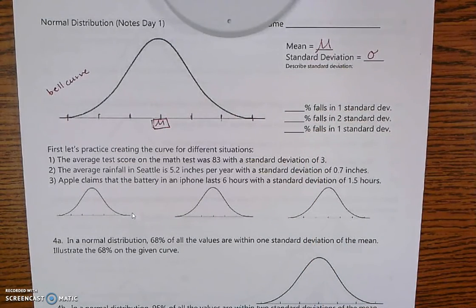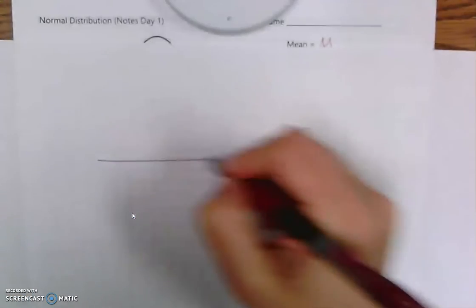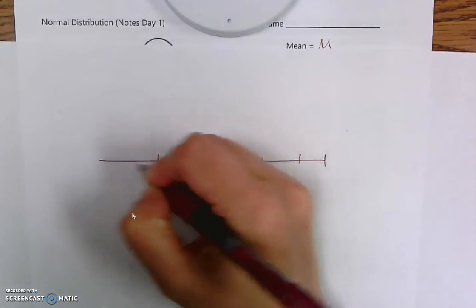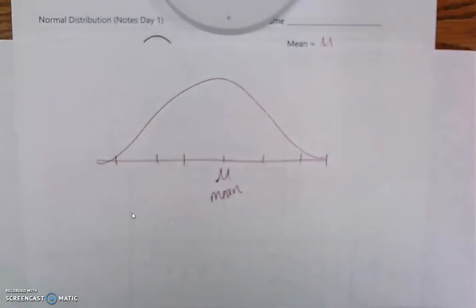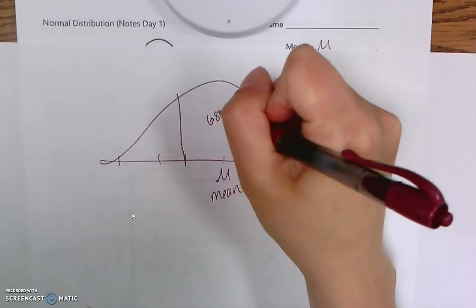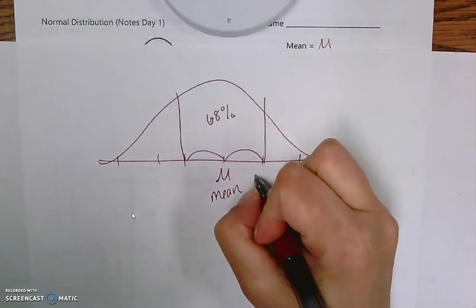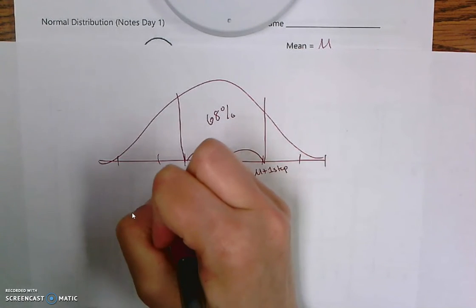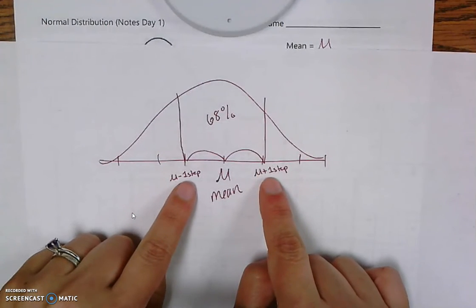I'm going to start by giving you an example, and then we'll go back and fill in these notes. We're going to learn that the standard deviation is based on a certain number so that a certain amount of information fits into our boundaries. So this is my normal curve, and my mean is in the center. They say that 68% of your data is in between one step up and one step down from the mean. In order for 68% of your data to fit in between those two boundary lines, the step has to be a certain size.